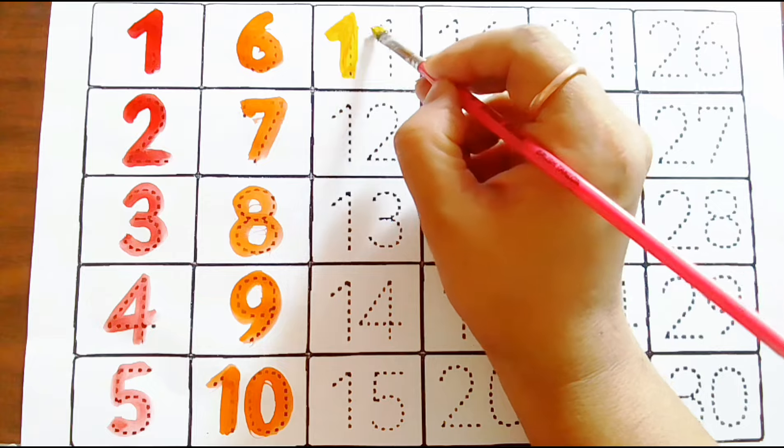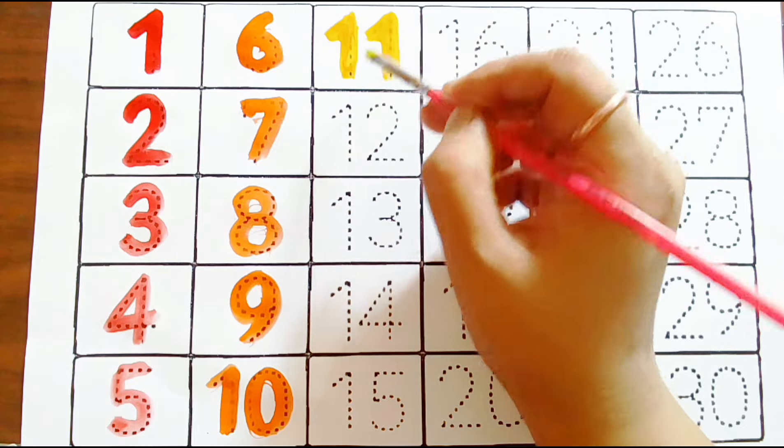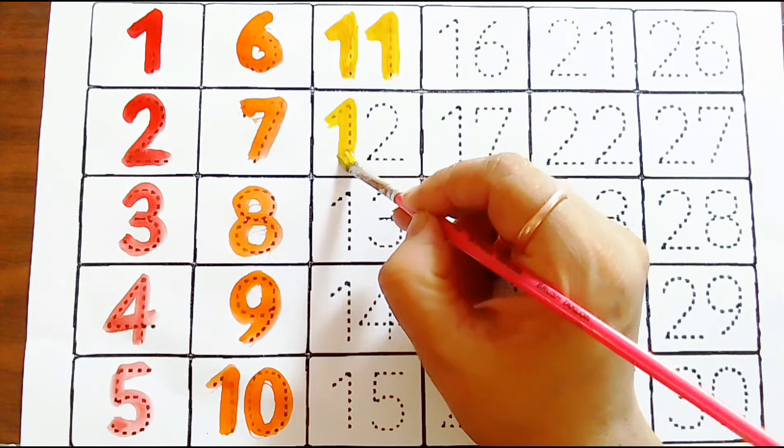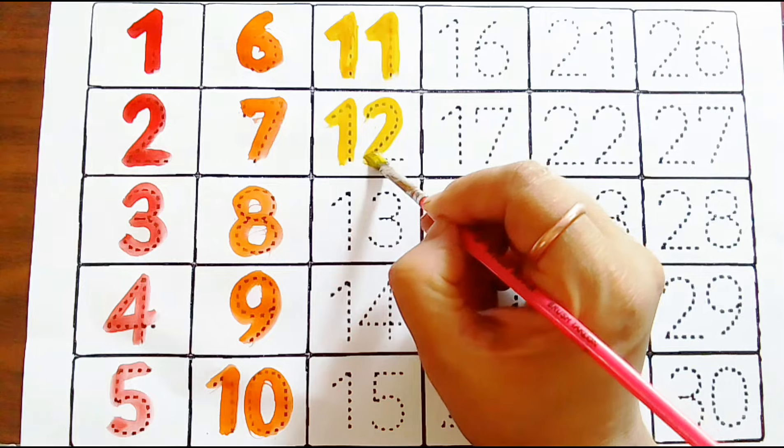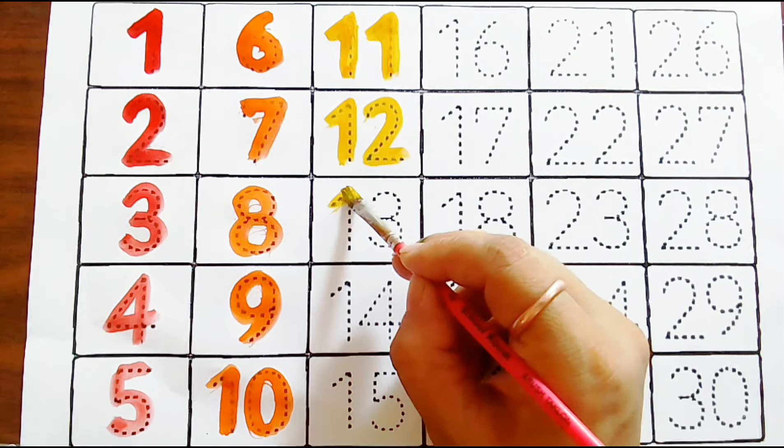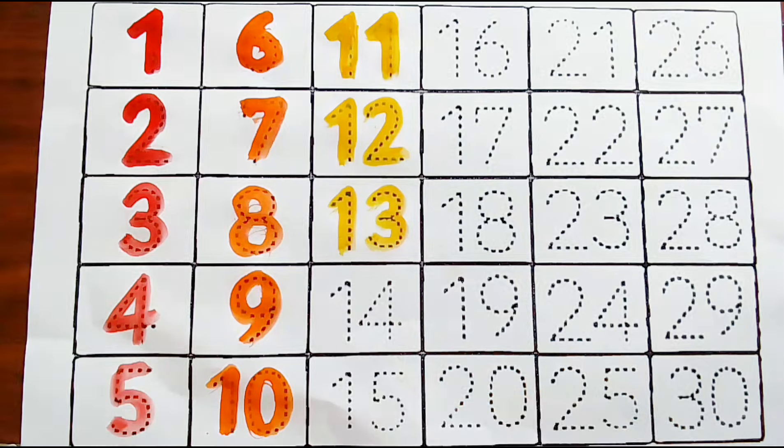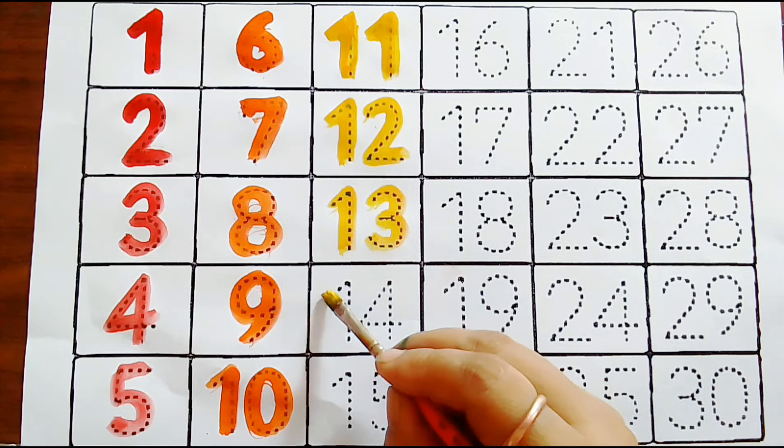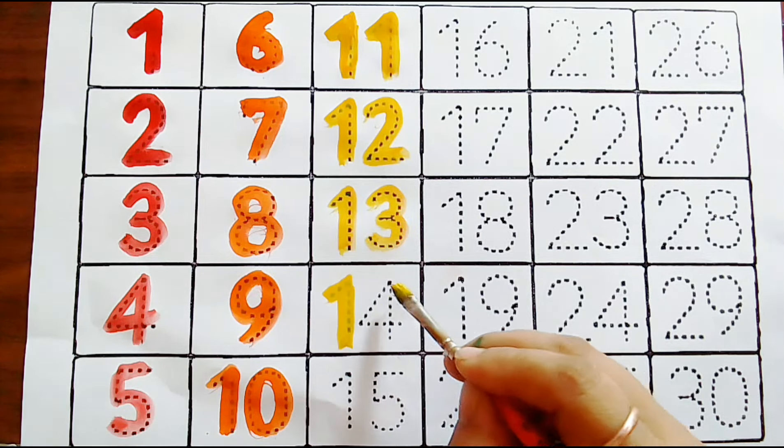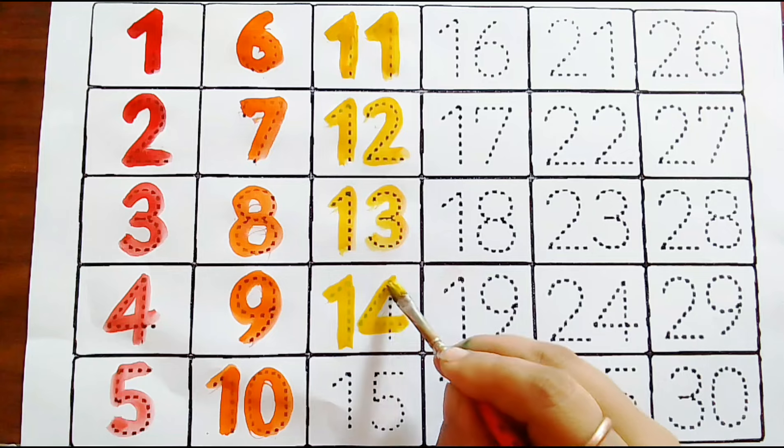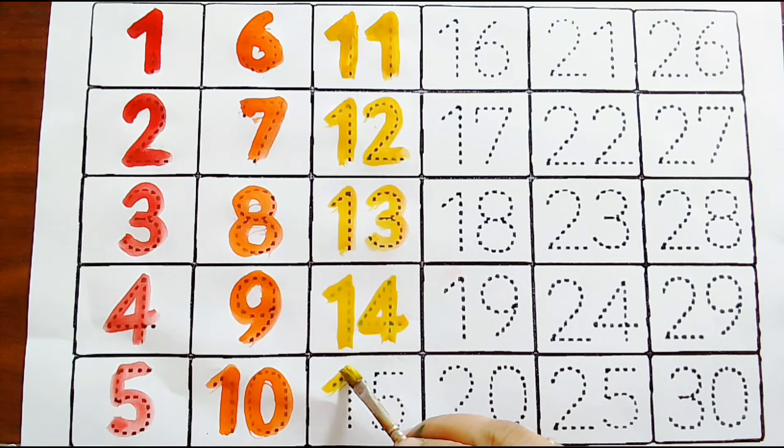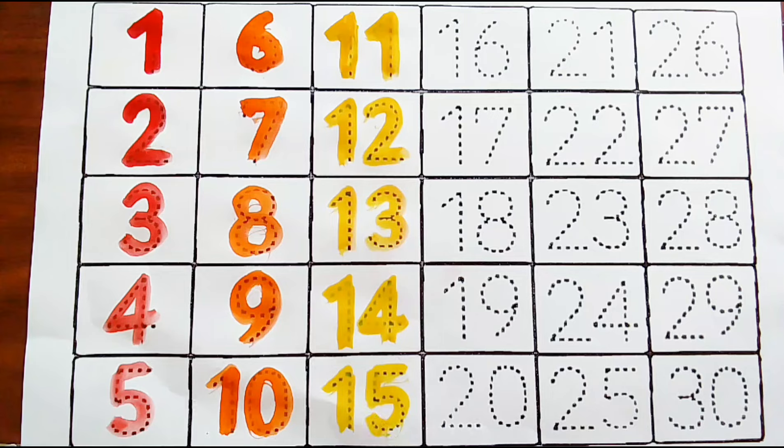Yellow color: one one, eleven. One two, twelve. One three, thirteen. Yellow color: one four, fourteen. One five, fifteen.